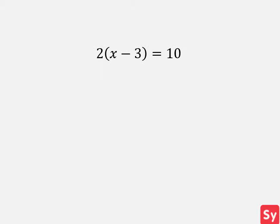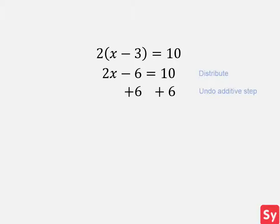Last example, we have the equation 2 times x minus 3 equals 10. First, we distribute the 2. This becomes 2x minus 6 equals 10. There aren't any like terms to combine, so next we undo the additive step. We see that 6 is subtracted from 2x, so we add 6 to each side. We add down and get 2x equals 16.